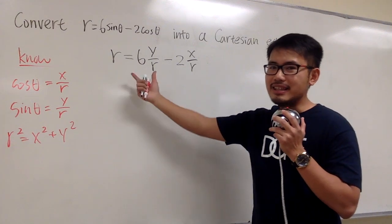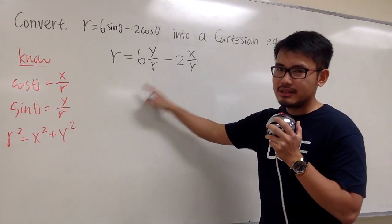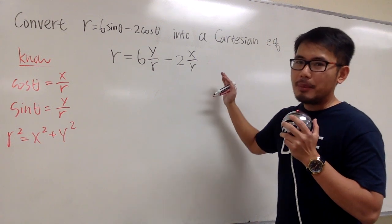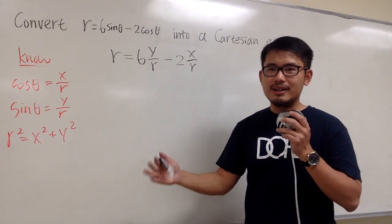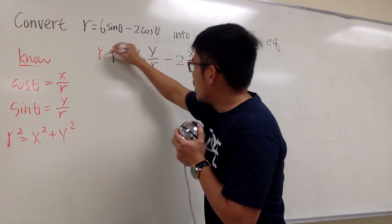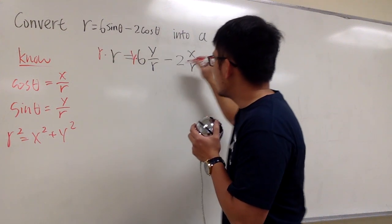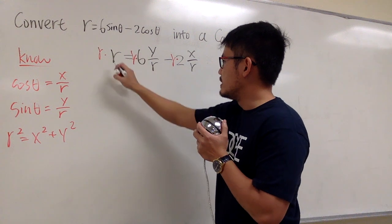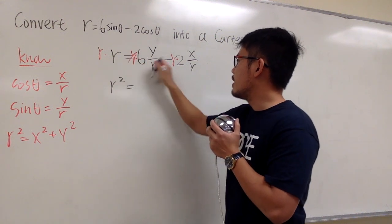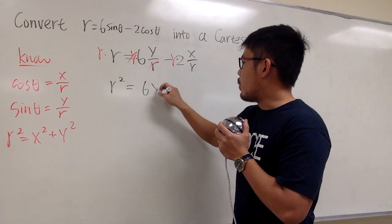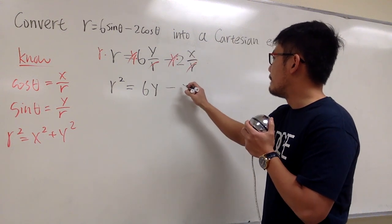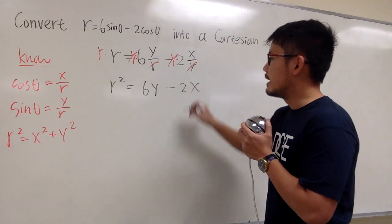And then you see that this equation has fractions. We have y over r and x over r. How about let's multiply everything by r to get rid of the fraction? Multiply this by r, multiply this by r, and then multiply this by r. So you see that we get r squared equals to, this r and that r cancel, 6y minus this r and that r cancel, minus 2x.